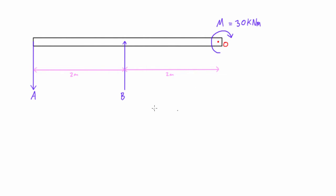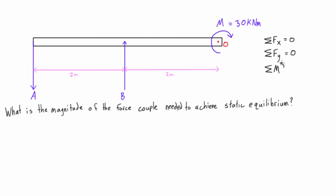So the question is what is the magnitude of the forces in the force couple needed to achieve static equilibrium? Well, we know to achieve static equilibrium that the sum of forces in the x-direction has to equal zero, the sum of forces in the y-direction has to equal zero, and the sum of moments has to equal zero.